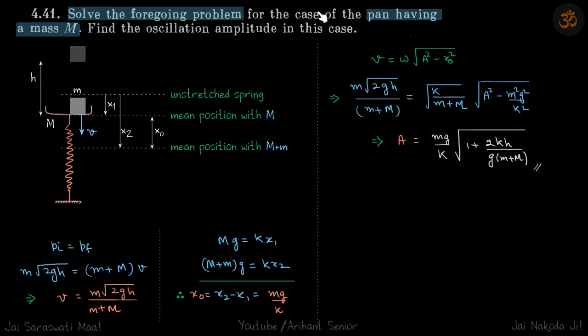Solve the foregoing problem if the pan has a mass M. Initially, the pan has mass M and a block has fallen from a height h. The pan is at rest initially, so it is at its mean position.